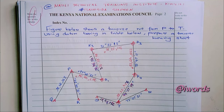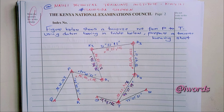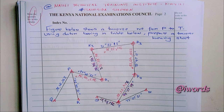Welcome to today's lesson. We are going to learn about traversing, and under traversing we are going to deal with something called a bearing sheet. This is a lesson from Matilly Technical, presented by Gadigira Steven. The figure below shows a traverse run from P to T using the datum bearing in the table below. We are to prepare a traverse bearing sheet — a question from NEC, mostly in land survey but also in building and civil engineering diploma classes.